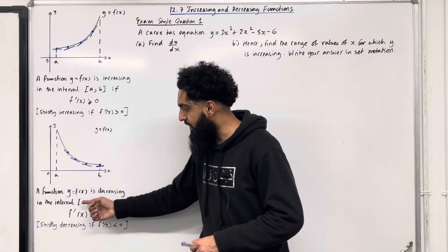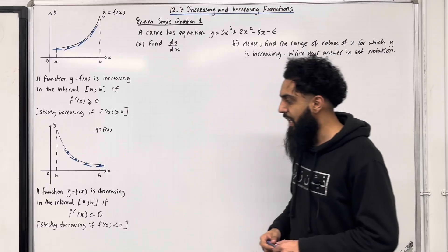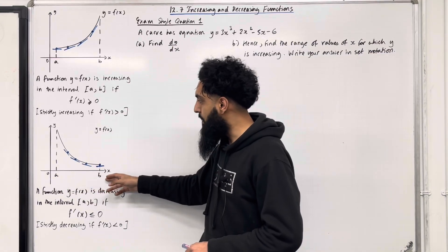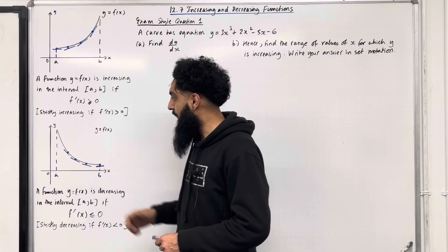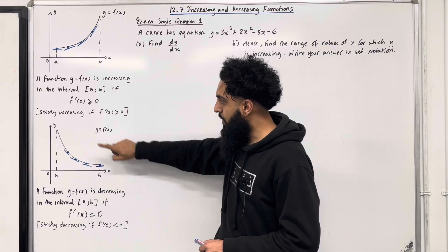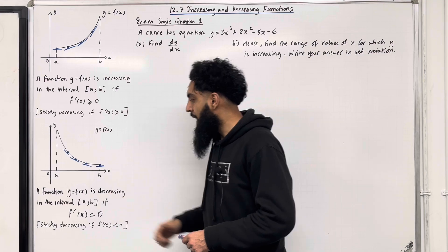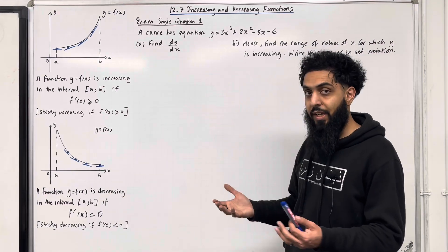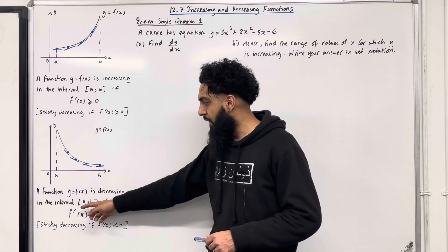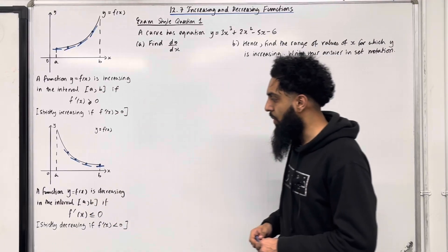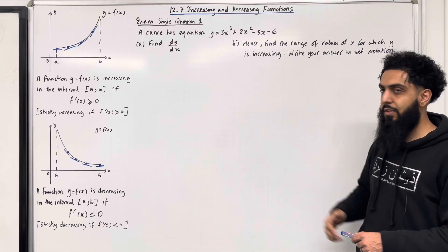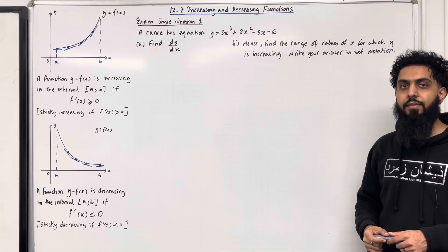Again, f'(x) represents the gradient of the tangent to the curve at the point x. Have a look at the interval a to b. These three tangents here have a negative gradient. This tangent to the curve at the point x = b has a gradient of 0. So again, in a nutshell, overall we have that the gradient function f'(x) is less than or equal to 0. These are the key facts of 12.7, increasing and decreasing functions.